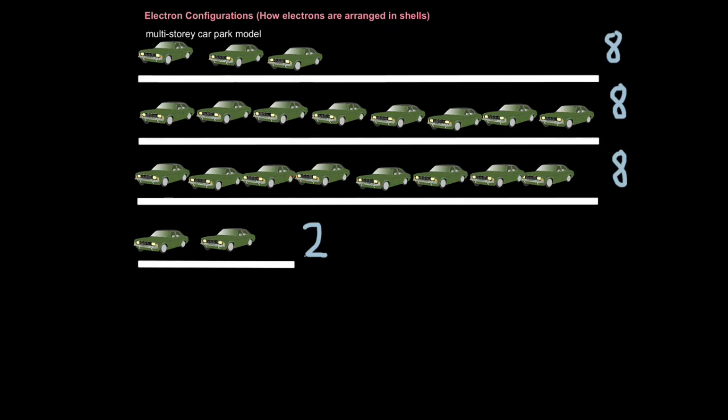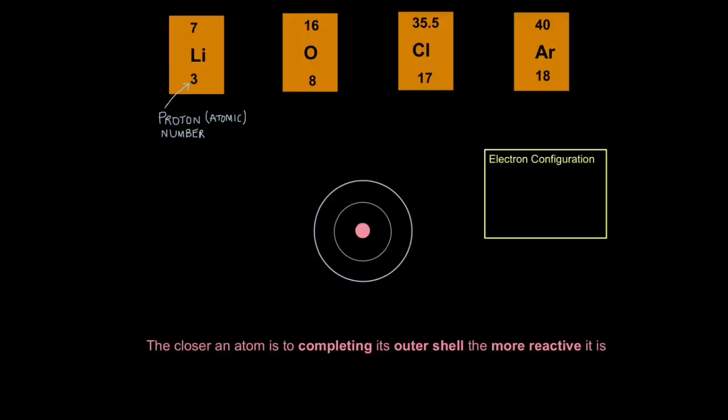It's pretty easy to remember. Just remember, the first floor can only take two, but every other floor can take up to eight. Each floor must be filled before the next one is accessed and filled up. In this model, each floor of the car park represents a shell that surrounds the nucleus of an atom. This is the first shell, second shell, third shell, fourth shell, etc. And each of the cars represents the electrons. Just keep this sentence in mind. The closer an atom is to completing its outer shell, the more reactive it becomes.